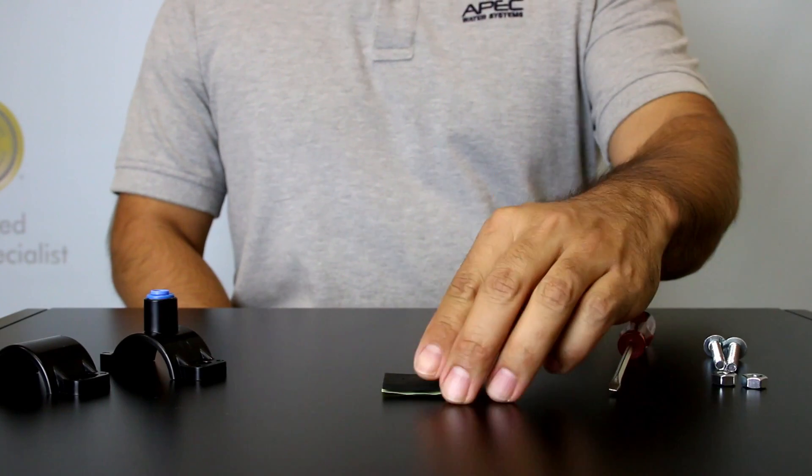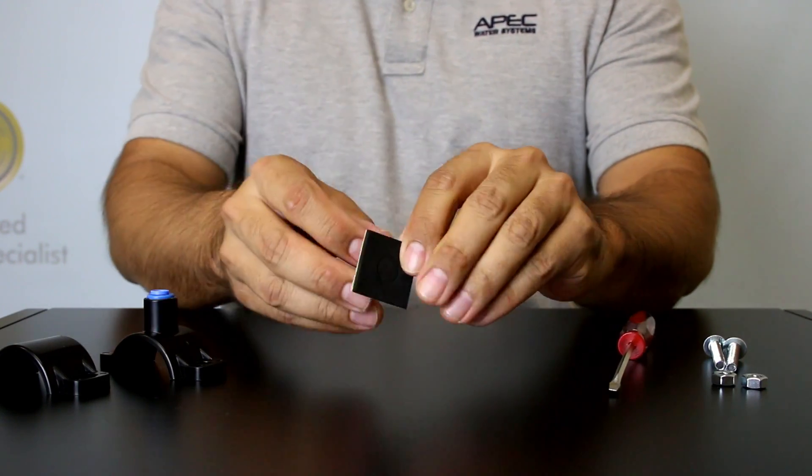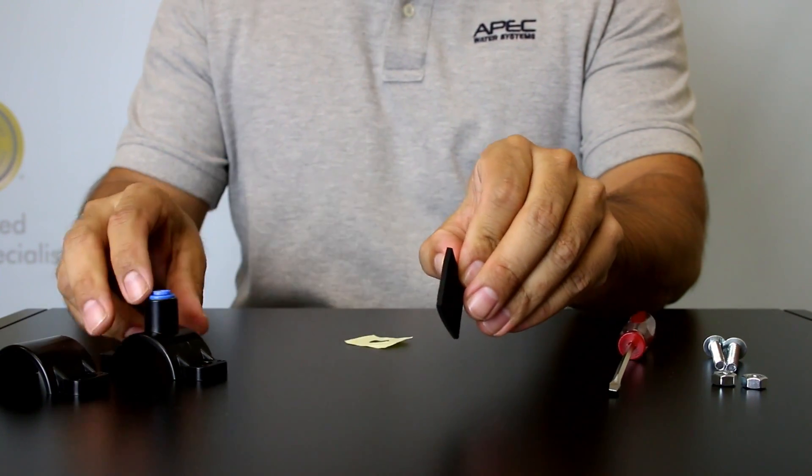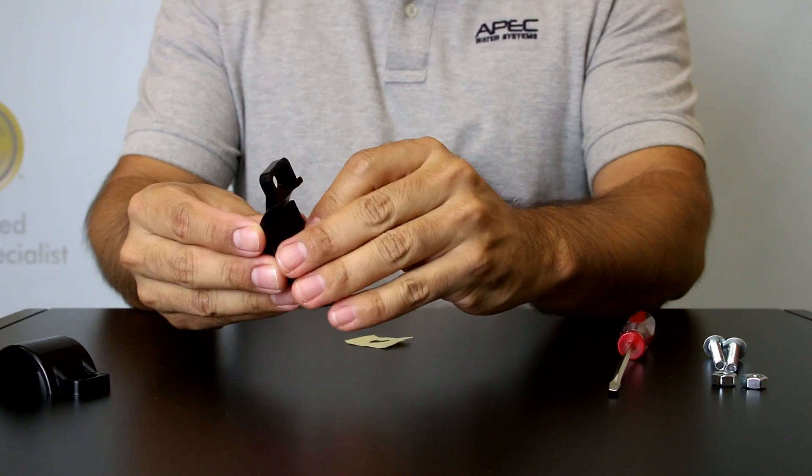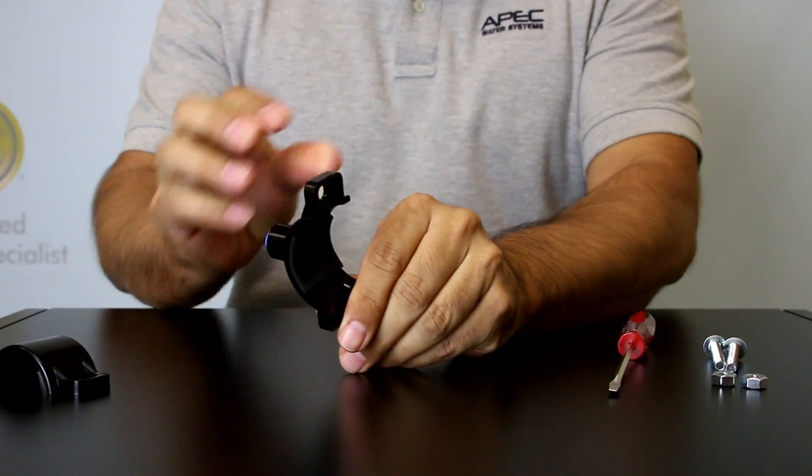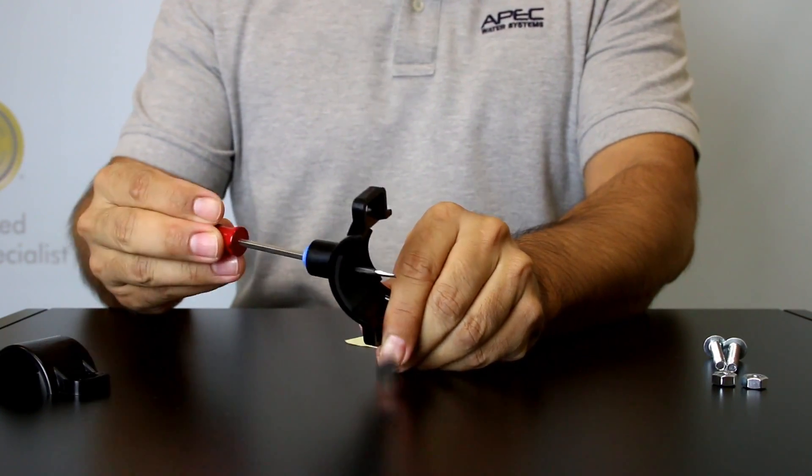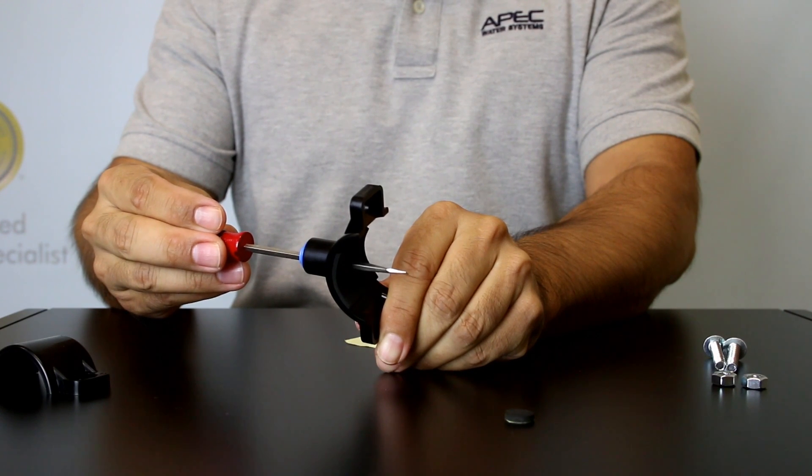A piece of self adhesive sponge tape is provided to place inside on the top piece of the saddle. This will cushion any gap between the saddle and the pipe. Using a thin screwdriver, make sure the hole on the sponge tape is thoroughly punched out and is aligned to the hole on the saddle. Use the thin screwdriver to guide the alignment of the top portion of the drain saddle onto the drain pipe.